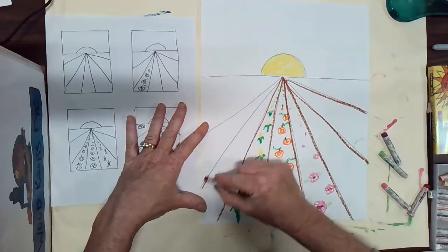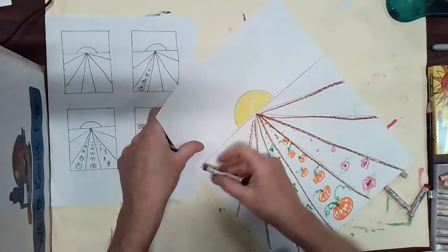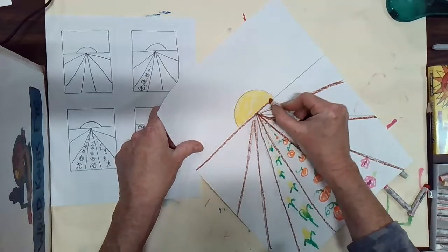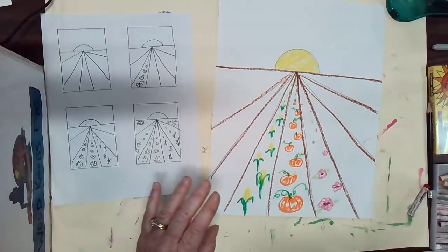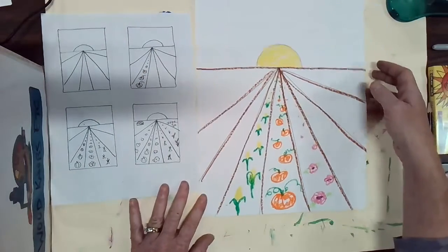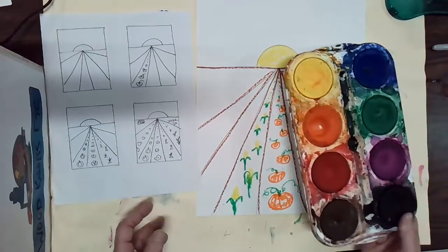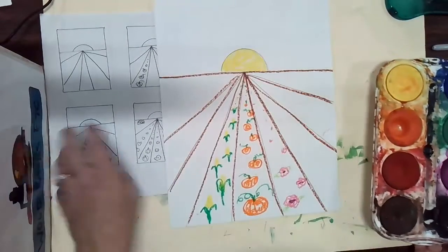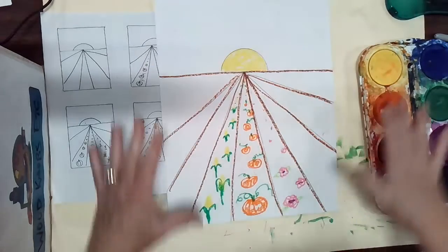When you are all finished with all of that, the next step is going to be adding some paint. Now you would fill in more crops. I am going to move right on to the paint so I can show you the next step. We are going to be using some tempera cakes as the type of paint for today and tempera cakes are good for big areas.